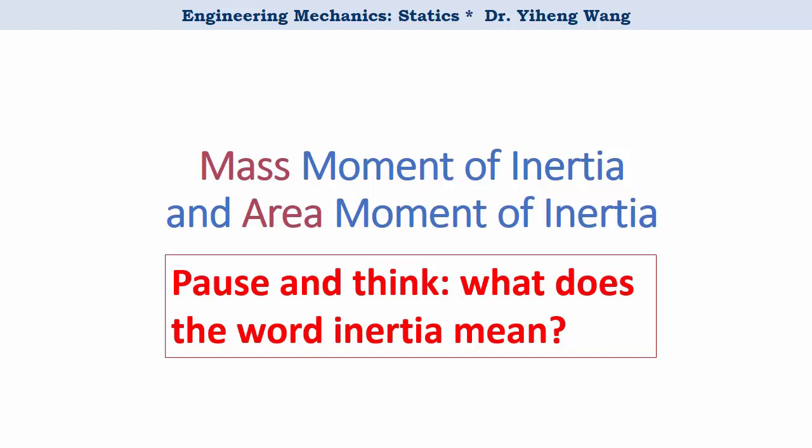The answer is, inertia is the resistance of an object to change in its state of motion, and the physical quantity that you are already familiar with is mass.